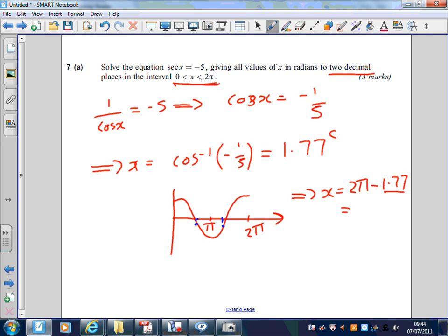So 2 pi minus that gives me 4.51 radians.